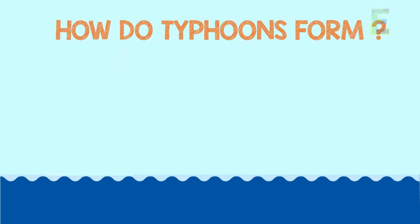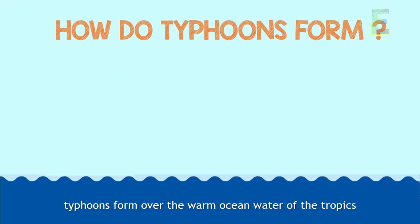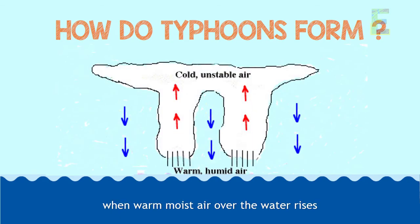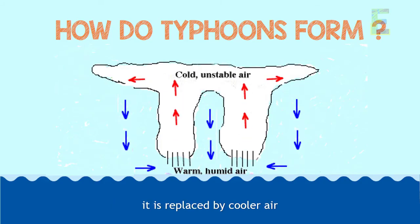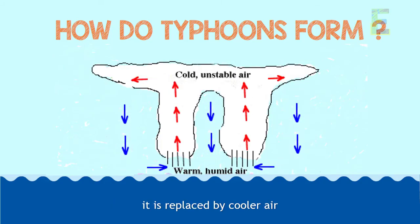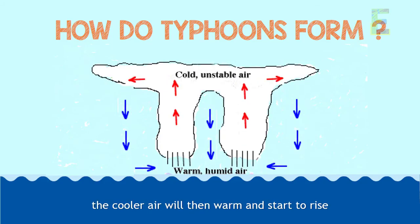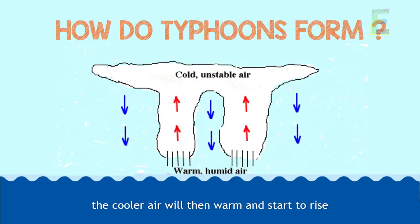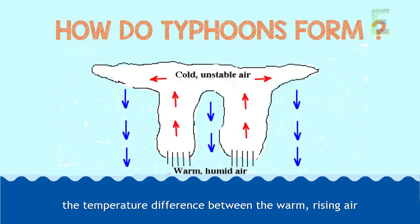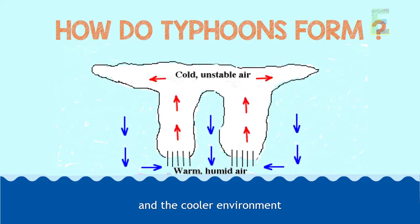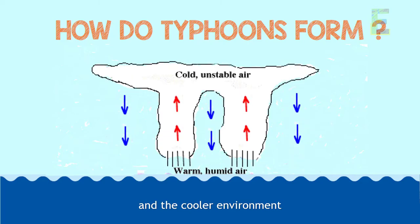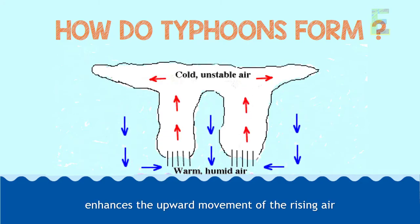Now how do typhoons form? Typhoons form over the warm ocean water of the tropics. When warm moist air over the water rises, it is replaced by cooler air. The cooler air will then warm and start to rise. The temperature difference between the warm rising air and the cooler environment enhances the upward movement of the rising air.